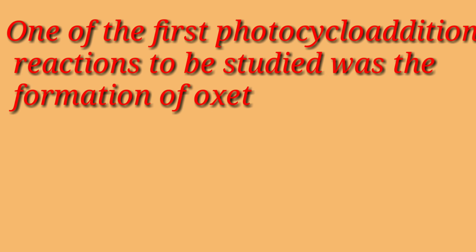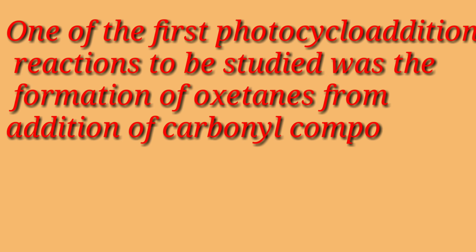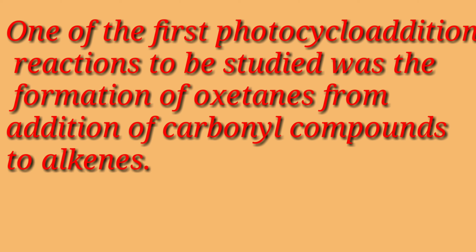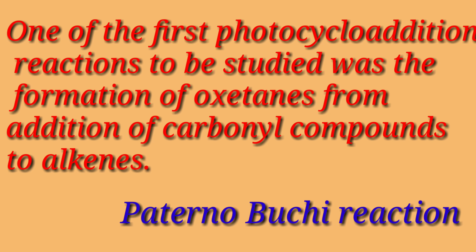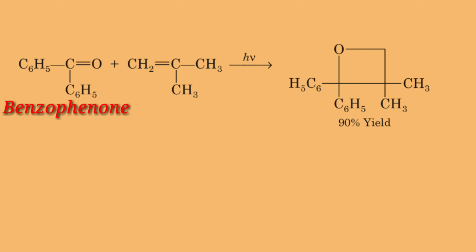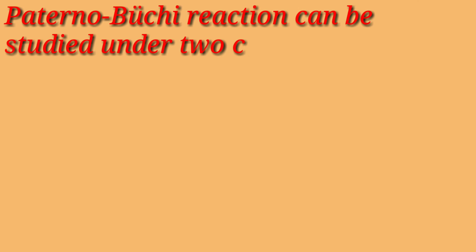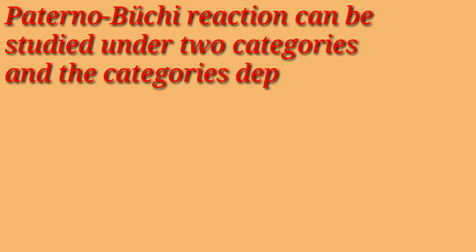One of the first photocycloaddition reactions to be studied was the formation of oxetane from addition of carbonyl compounds to alkenes. This reaction is known as the Paternò-Büchi reaction. For example, benzophenone reacts with isobutene to give a high yield of an oxetane. The Paternò-Büchi reaction can be studied under two categories depending on the nature of the alkene.